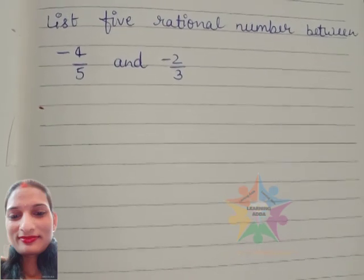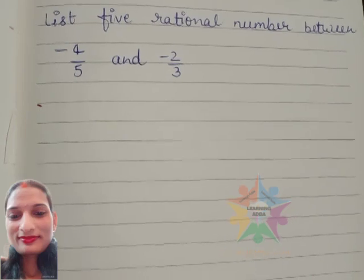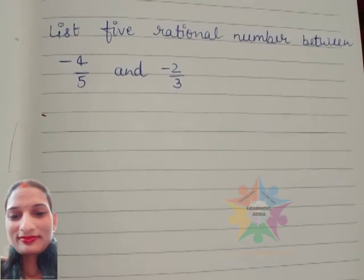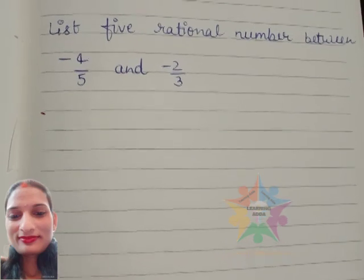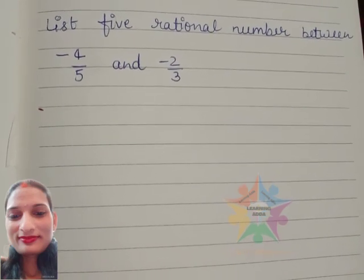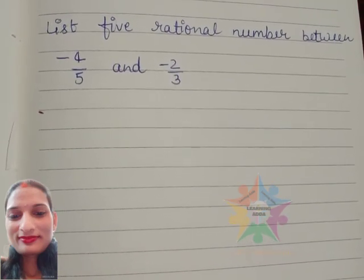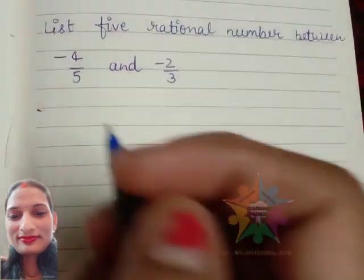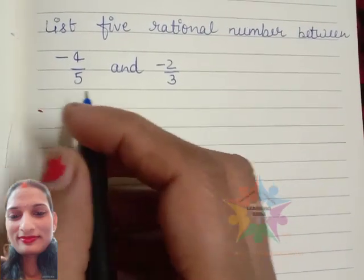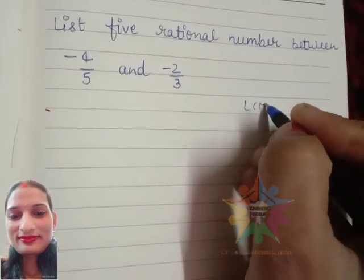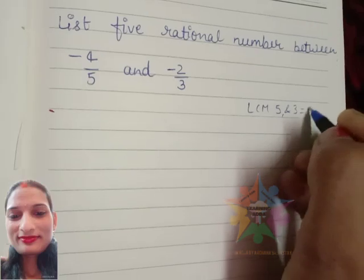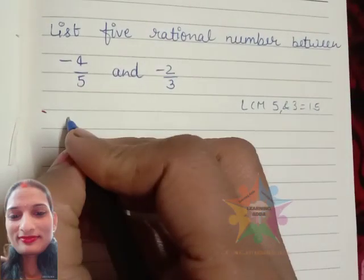First step: we need to make the denominators equal. The denominator will be equal to the LCM of 5 and 3. LCM of 5 and 3 equals 15.